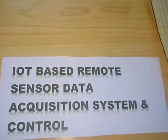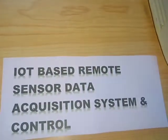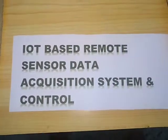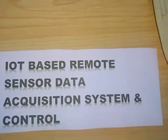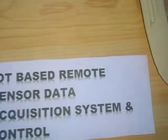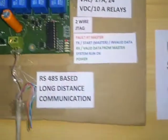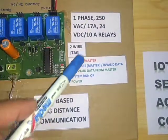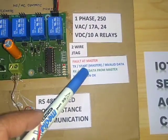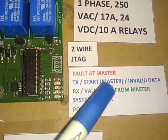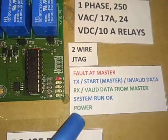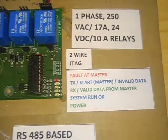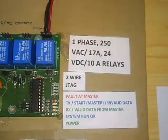In my previous video, I said that I will show you the working of the slave and the master together. I will purposefully turn on the slave first because the slave will give the start condition LED — the start master LED. The start condition LED will light up, system run will be on, and the power will be on. So let me just switch on the slave module.